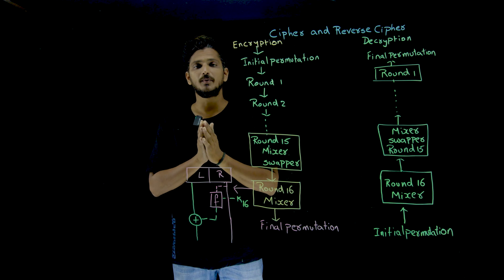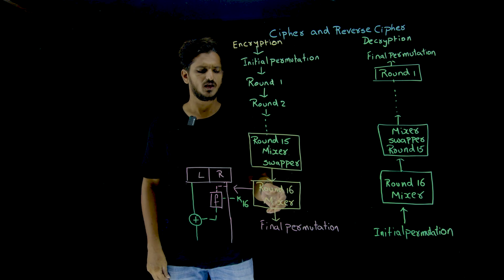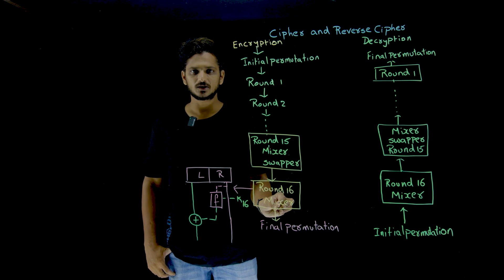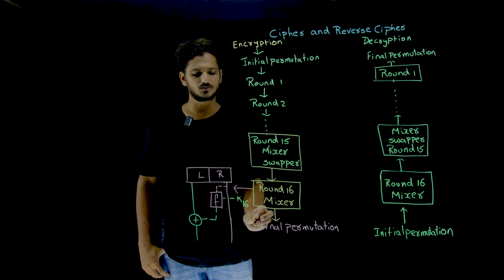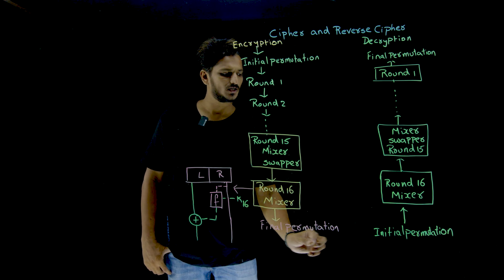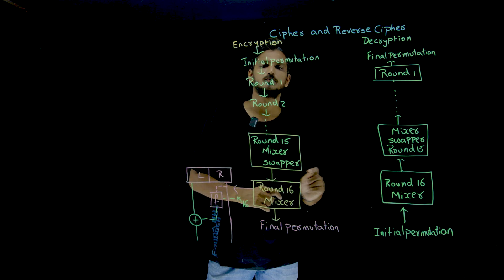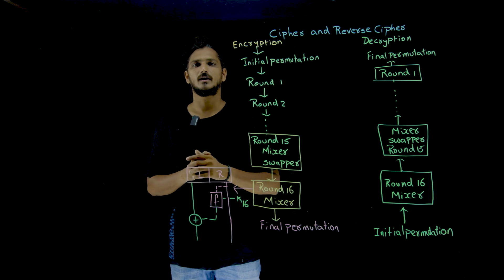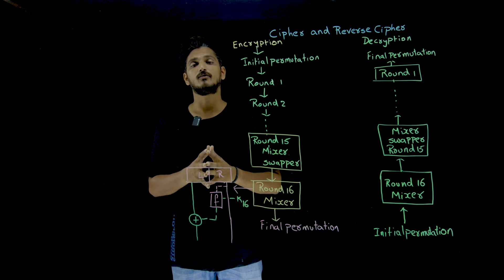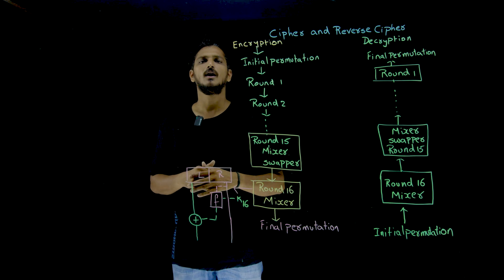This is one way most implementations will follow. There is a second way as well, and it is very simple. Here we are eliminating the swapper in round 16. Some implementations do not eliminate the swapper — they keep the swapper, meaning right hand side is moved to the left hand side and left hand side is moved to the right hand side, and then it moves to the final permutation. During the decryption in round 16, you have to add the swapping also. Eliminating the swapper is the first technique; keeping the swapper is the second technique. You can follow any one of the techniques — it does not matter which one you follow.